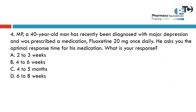A 40-year-old male has recently been diagnosed with major depression and was prescribed fluoxetine 20 mg once daily. He asks about the optimal response time for his medication — after how long will he get the full or maximum response? For SSRIs or most antidepressant drugs, it will take time, and the answer is six to eight weeks.